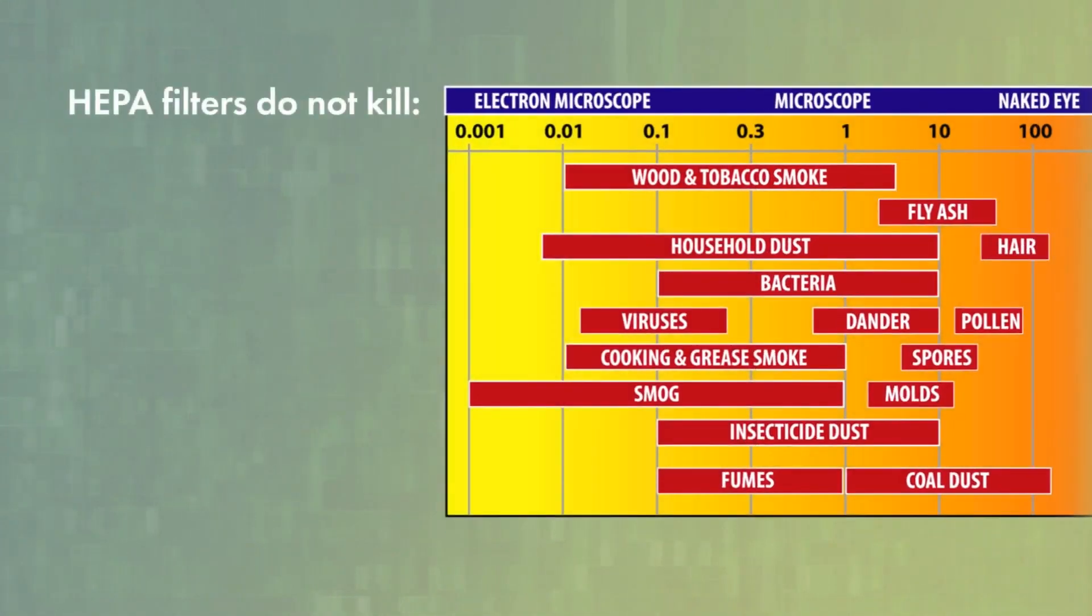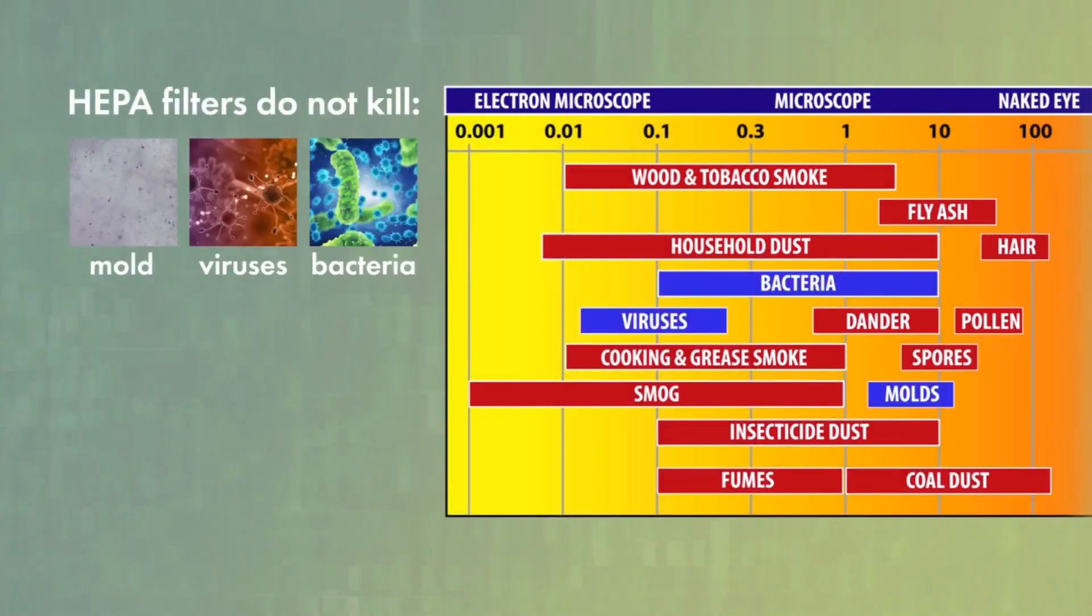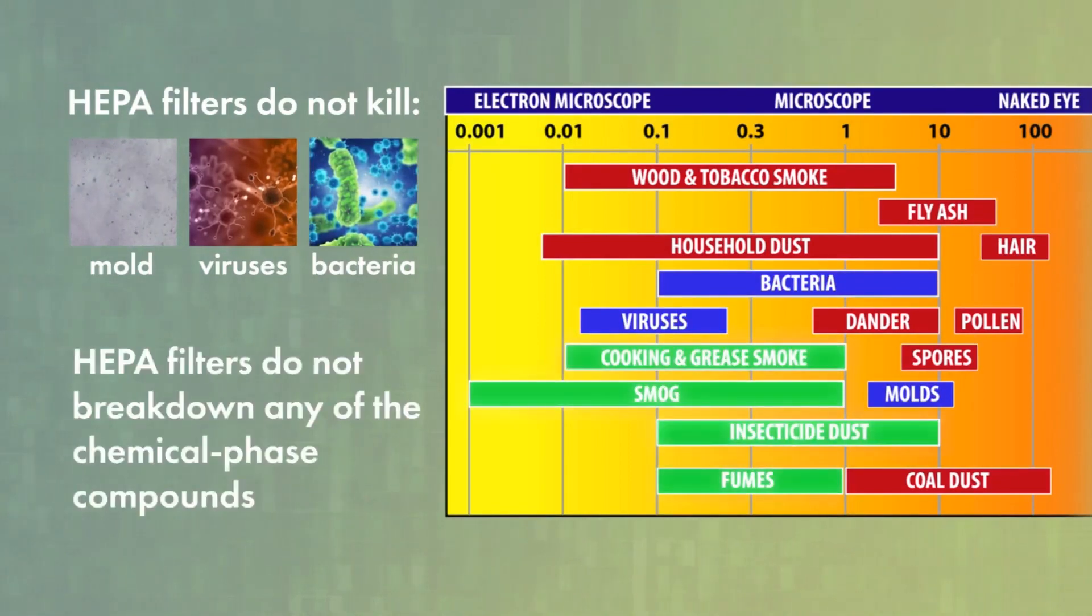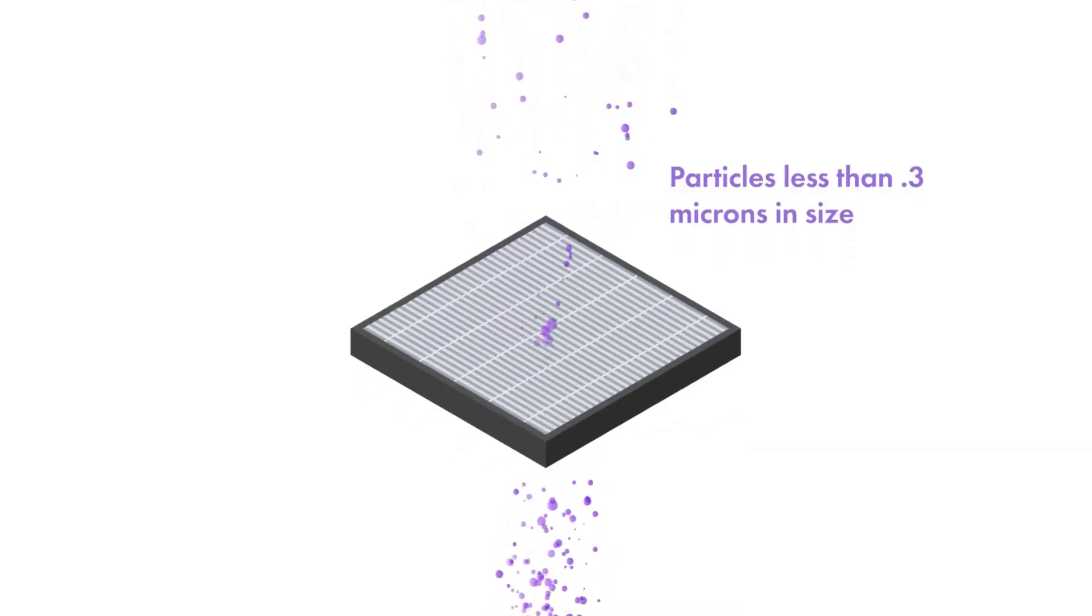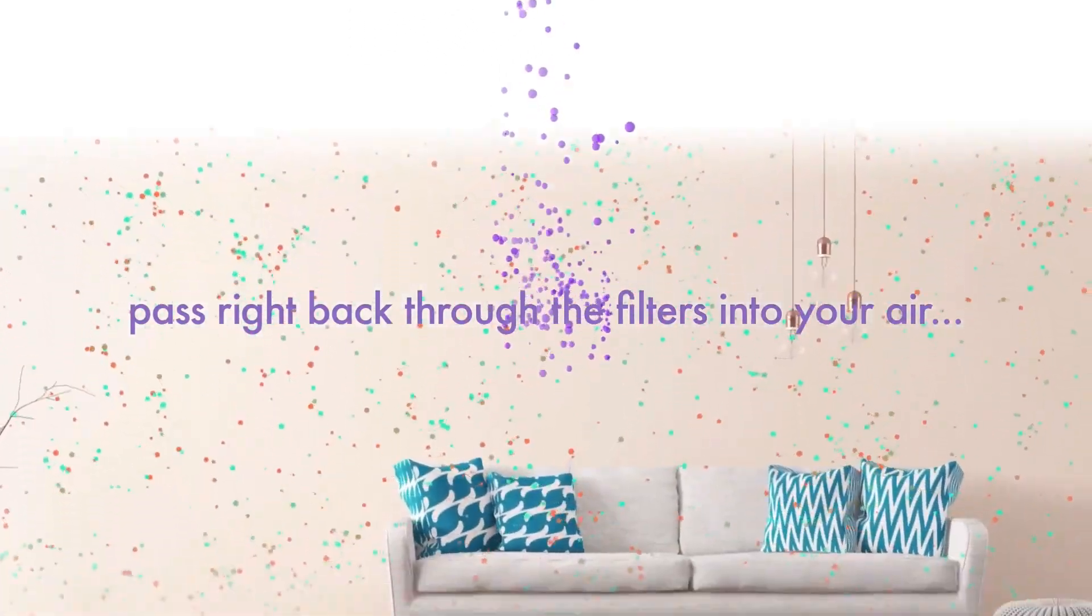HEPA filters do not kill mold, viruses and bacteria, nor do they break down any of the chemical phase compounds. Small, dangerous particles pass right through the filters back into your air.